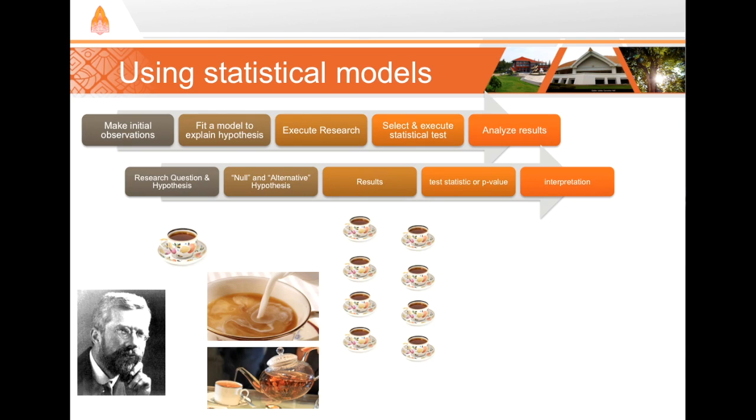In this case, Fisher chose a statistical test. Actually, he invented his own at that time, and we now call that Fisher's exact test. We can understand the process that he went through to be like this. Because there's eight cups, and four out of those eight have milk poured first, we can create 70 possible orders or permutations of the cups.